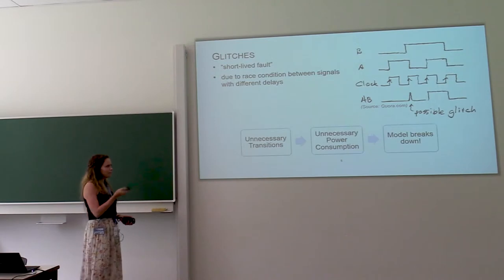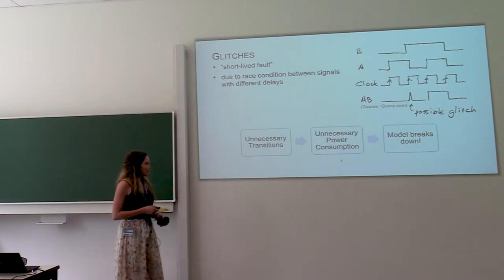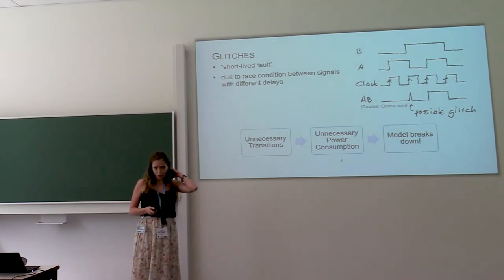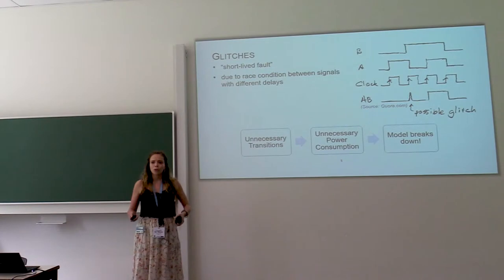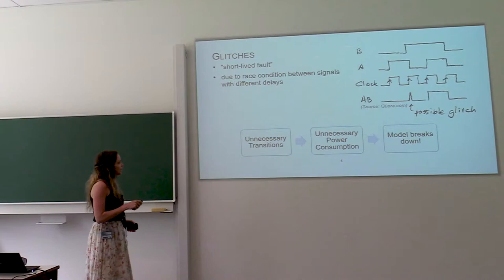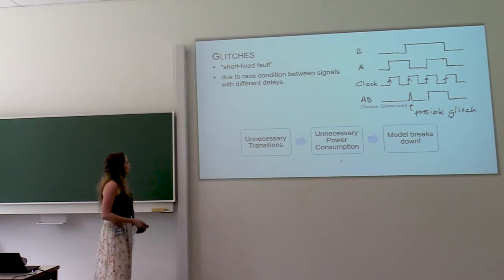Because like Benedict said, transitions consume power. And for the first five years when people were working on masking, it was believed that the power consumption only depends on the intermediate results of your calculation. But when glitches happen, this is no longer true. So this makes things more difficult.